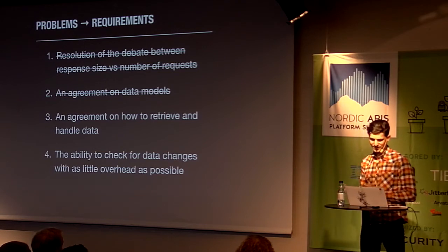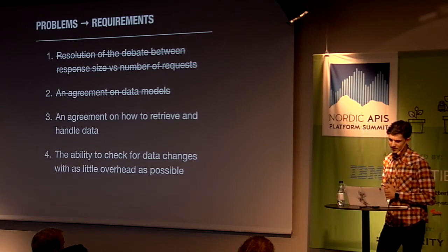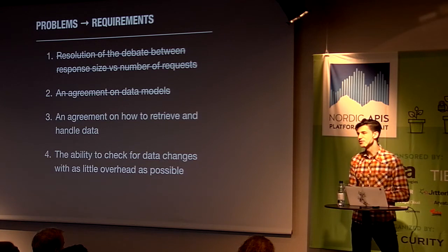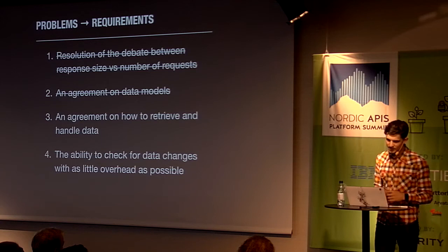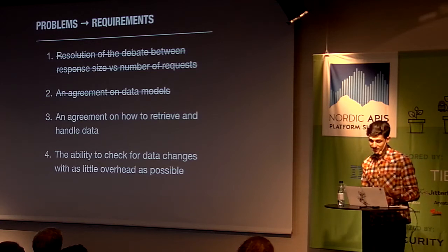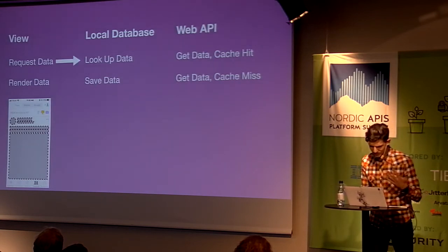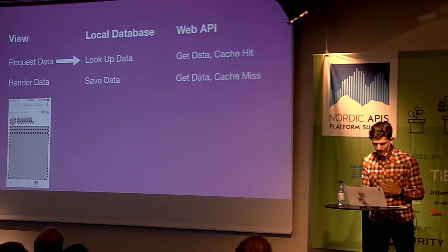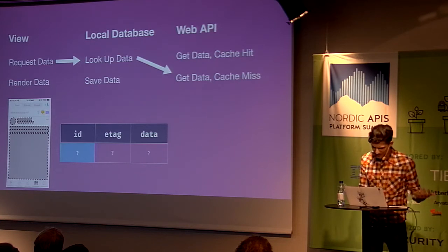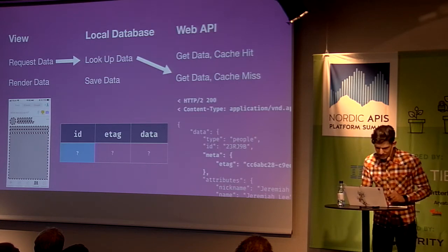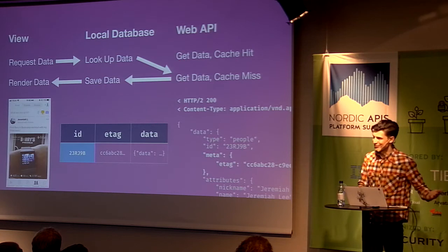One of the challenges is not just getting clients to agree to common data models, but getting them to agree on a common way of retrieving, storing, and presenting data. Here is a data lifecycle for how clients might choose to implement this. For fresh data, the view requests data from the client's local database; the database won't have it, so it goes to the web API. It's a cache miss, the database saves the response, and the view renders.